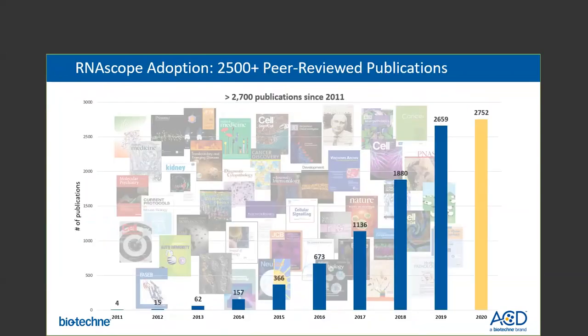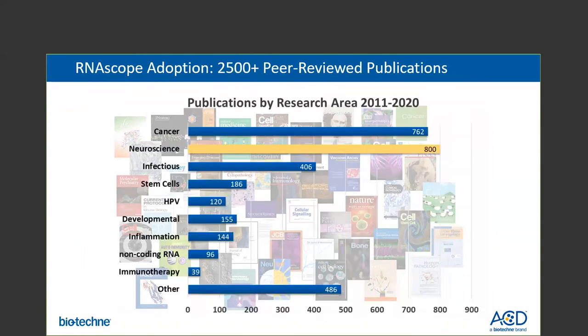The growth and adoption of this technology is best exemplified by the number of peer-reviewed publications. Since our first publication in 2011, there has been an increasing awareness of our technology, and currently we have over 2,752 peer-reviewed papers published in numerous journals including many top-tier ones. The RNAscope technology is highly relevant across multiple fields of research with over 40 percent of the publications in cancer research. Neuroscience and infectious disease are another two popular fields of interest.